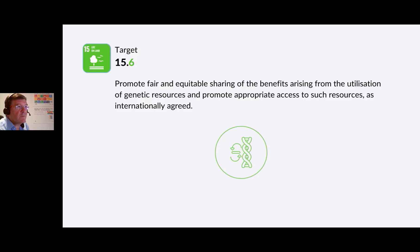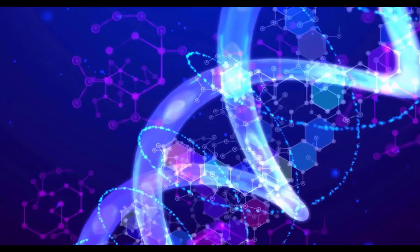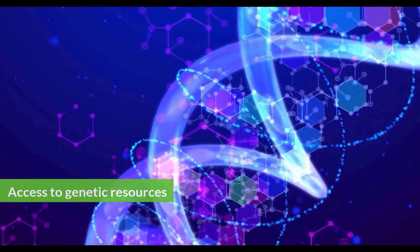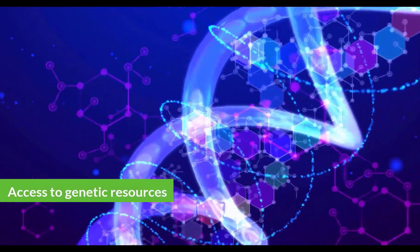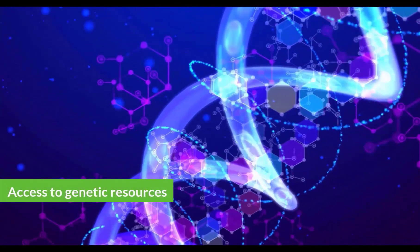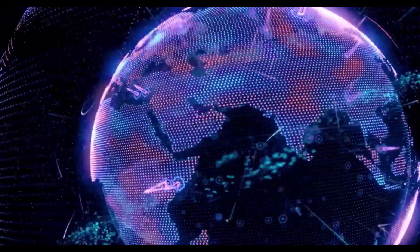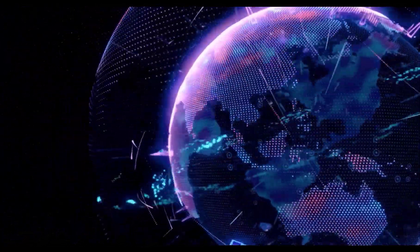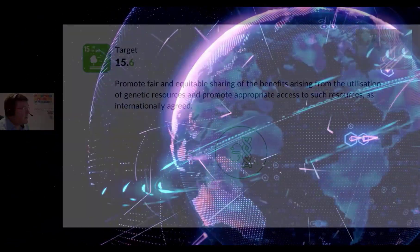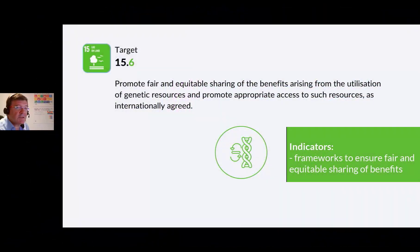Target 15.6: Promote fair and equitable sharing of the benefits arising from the utilization of genetic resources and promote appropriate access to such resources as internationally agreed. Throughout the goals and their targets, we see a need to share internationally, build capacity and work together with research. The indicator is the number of countries that have adopted legislative, administrative and policy frameworks to ensure fair and equitable sharing of benefits.